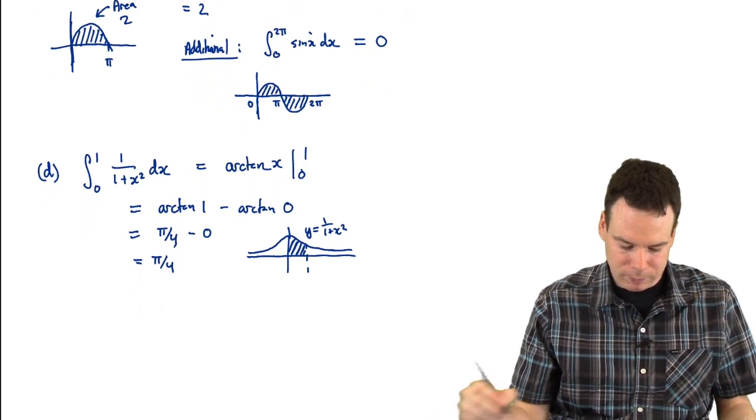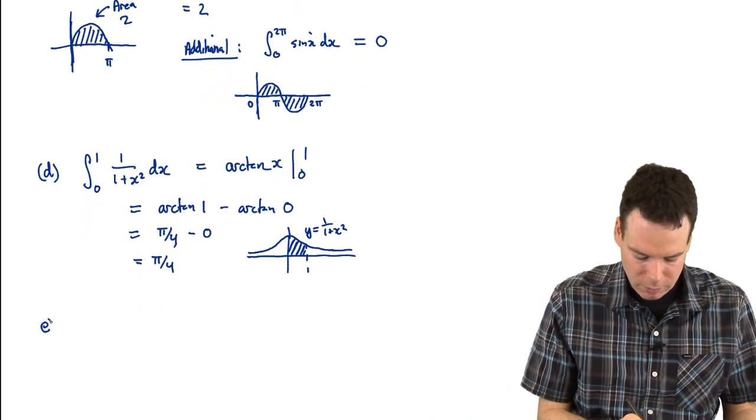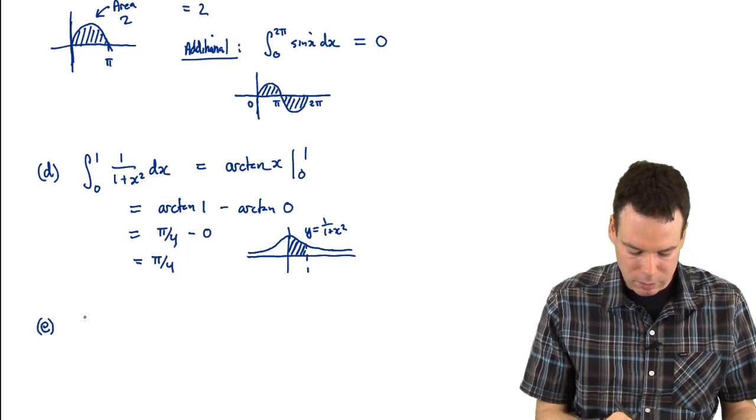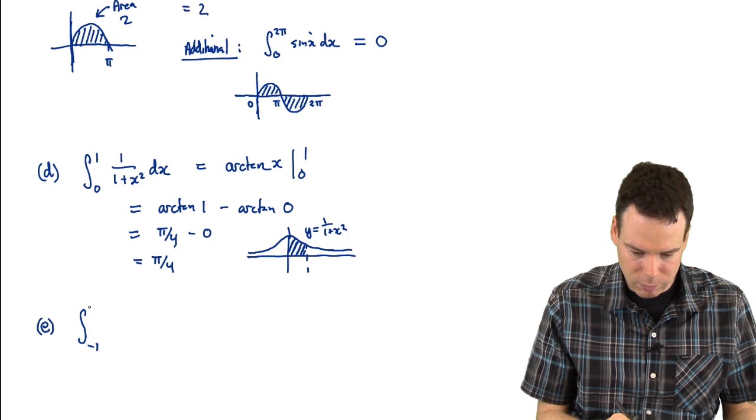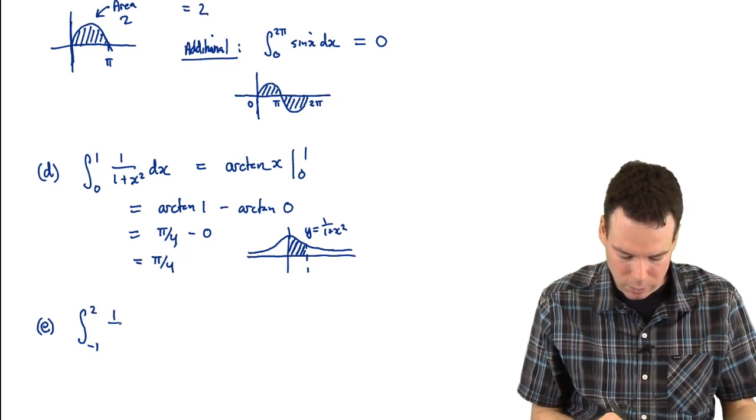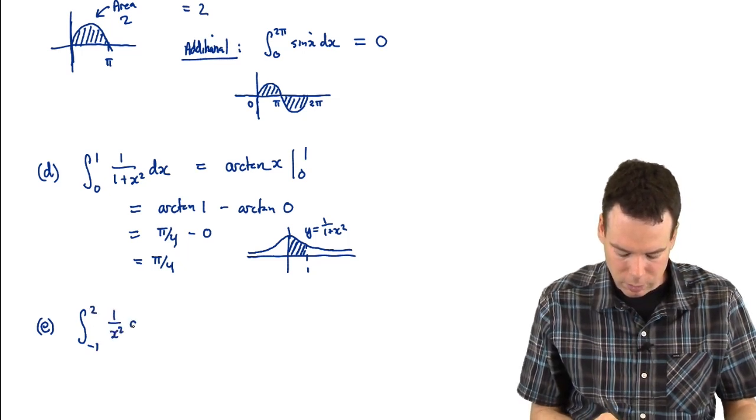I want to do just one more example. It's not listed above, but I think it's a good one to look at. So let's do the integral from negative 1 to 2 of 1 over x squared dx.